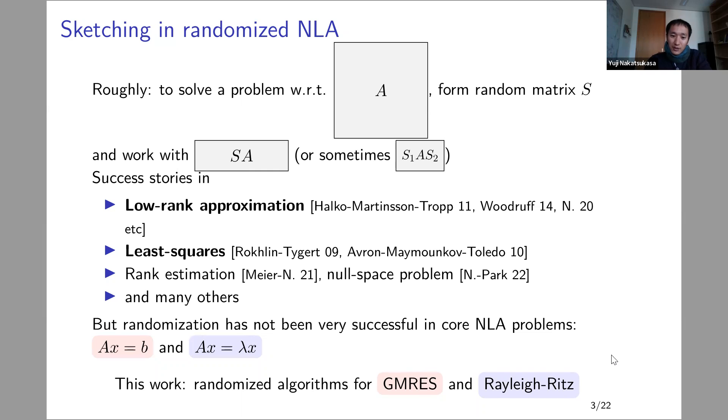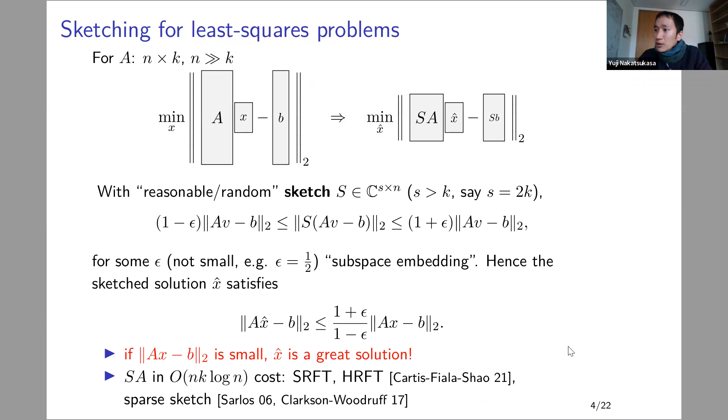The highlight of this talk is to use randomization for solving these core problems in numerical linear algebra. It turns out that what we do essentially is to use sketching for a problem that arises naturally in GMRES and Rayleigh-Ritz. GMRES is a linear system solver, Rayleigh-Ritz is essentially an eigenvalue solver. Before I get on to the algorithms we propose, I'd like to highlight a little bit of repetition from Cora's talk.